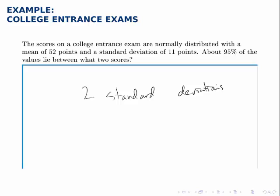Since one standard deviation is 11 points, two standard deviations is 22 points, twice that.